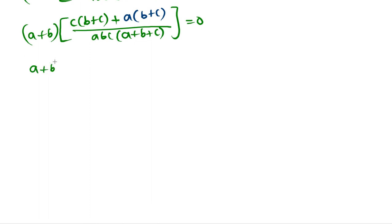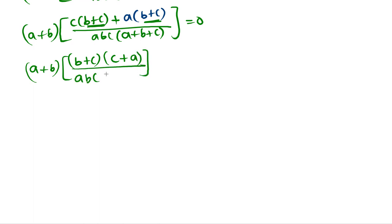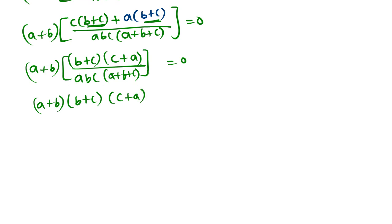Observe that B plus C is common in both terms in the bracket. Taking B plus C as common, the remaining values are C and A. So we can write (A+B)(B+C)(C+A) divided by ABC(A+B+C), and this equals 0. Sending the denominator to the right side gives (A+B)(B+C)(C+A) equals 0.